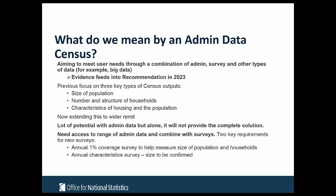So what do we mean by admin data census? We're aiming to meet user needs by using a combination of different data sources — admin data, survey data, and other types such as big data. All of this evidence will feed into a recommendation about the future of the census in England and Wales in 2023. Previously we focused on three key types of outputs: the size of the population, the number and structure of households, and the characteristics of housing and population.